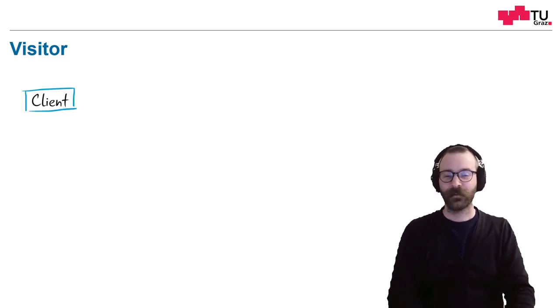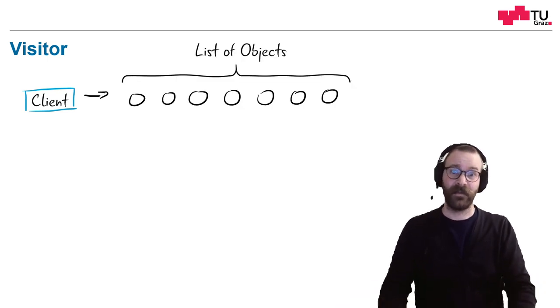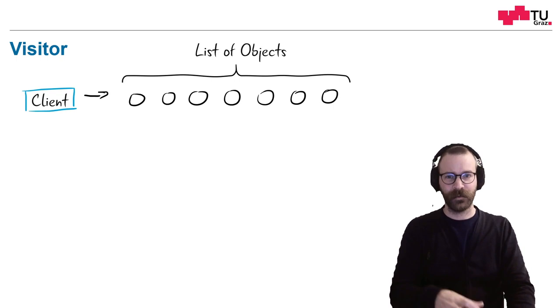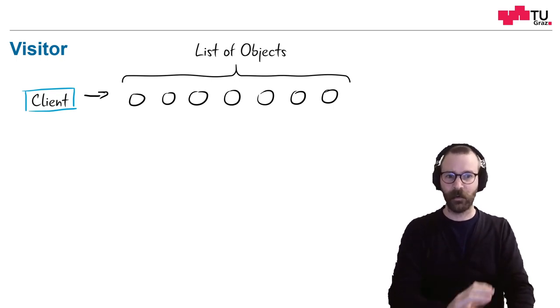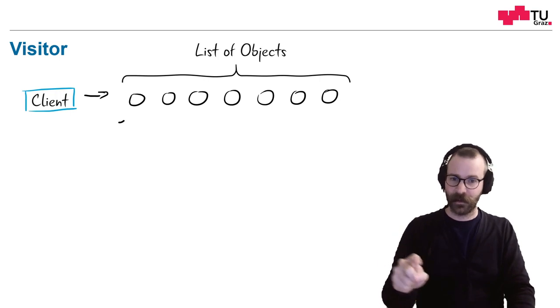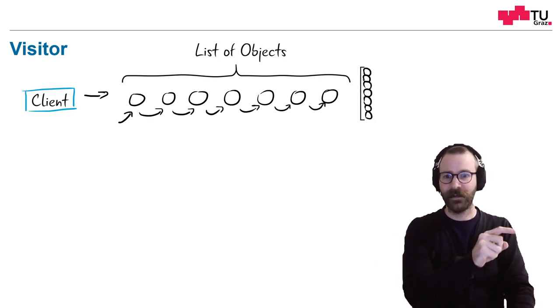What does this mean? We as a client work on an aggregate of objects, which is a list of objects, for example. And here we have many figures of circles. What if we want to apply a functionality on all these objects? Of course, we have to iterate over each and every one of them.